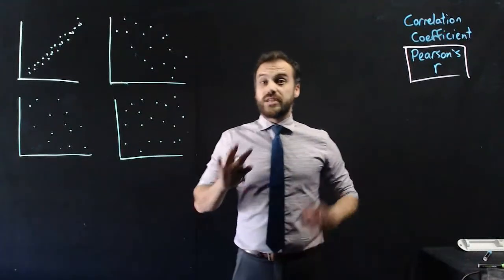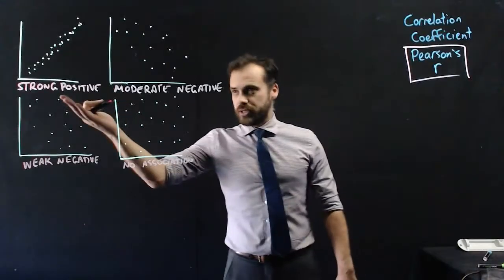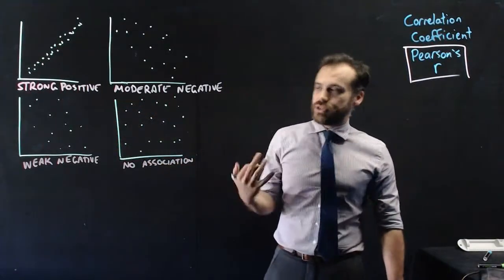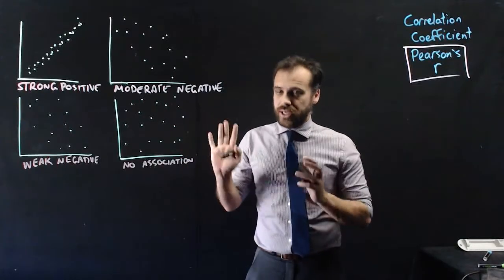In a previous video we looked at graphs like this and we interpreted them and we used words to do that. A strong positive association, a moderate negative association, a weak negative association, no association at all. There are lots of other ones but you get the idea.